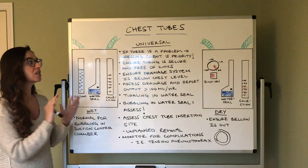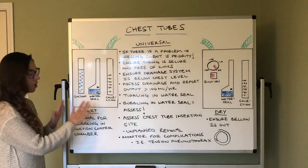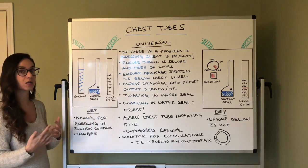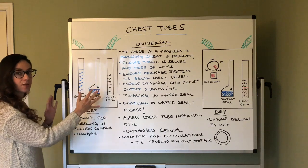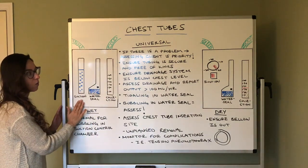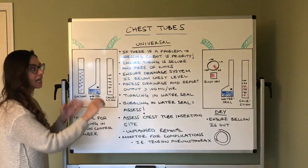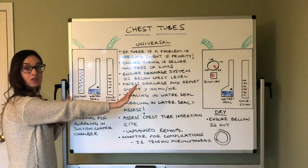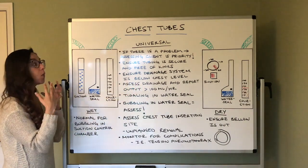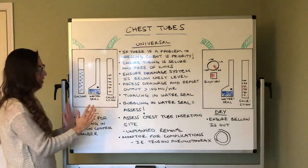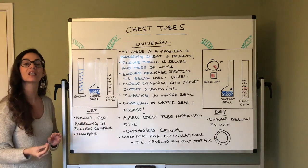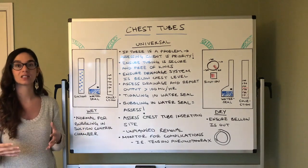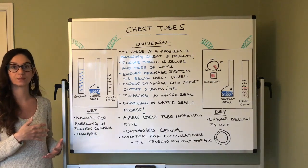We have two common chest tube devices: a wet device and a dry device. The collection device chamber is typically called an atrium. I've listed universal implications regardless of whether you're using a wet or dry suction control chamber, and then under each device, the differences you need to keep in mind to maintain and reestablish negative pressure so your client can breathe effectively.